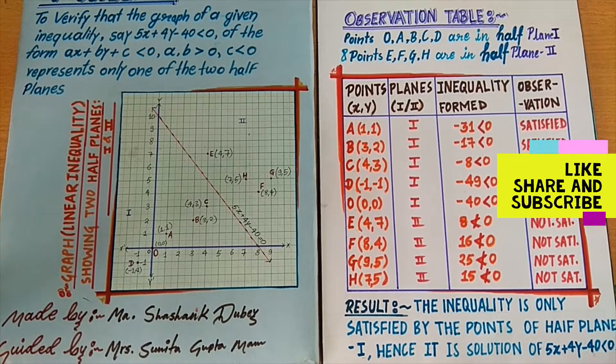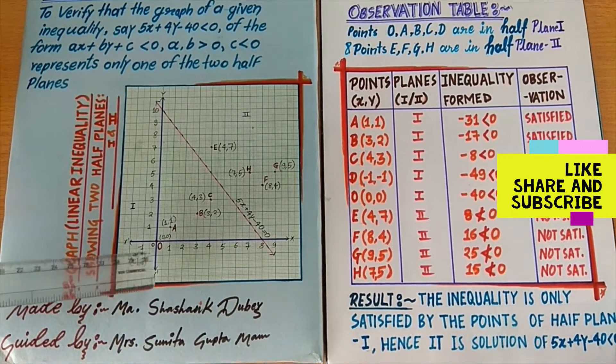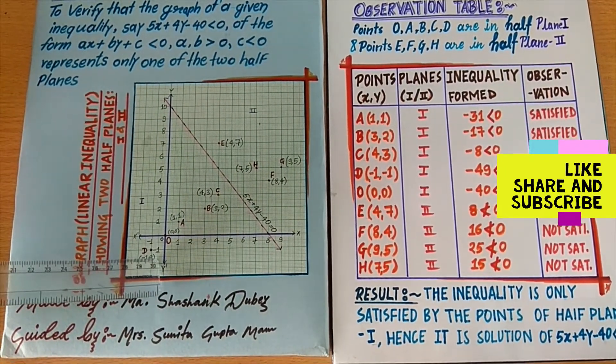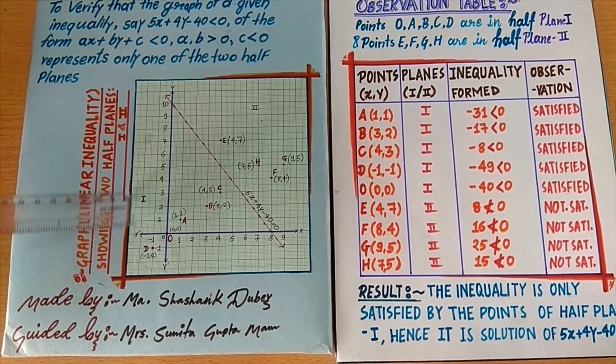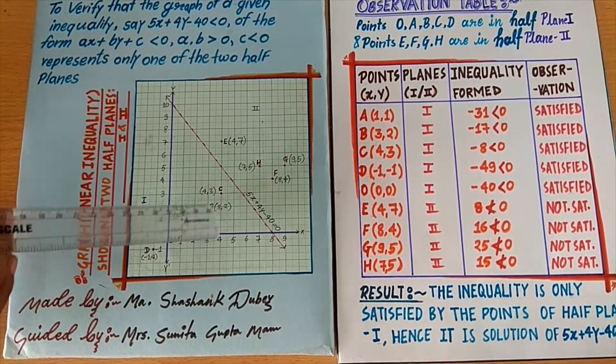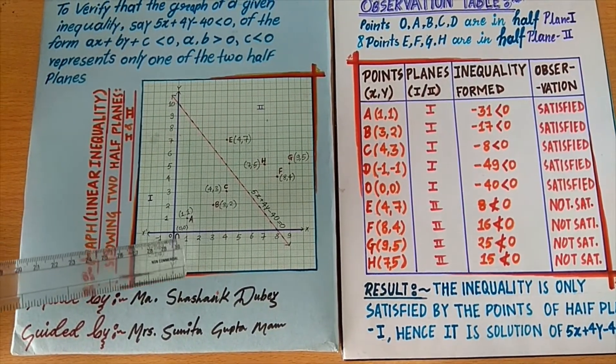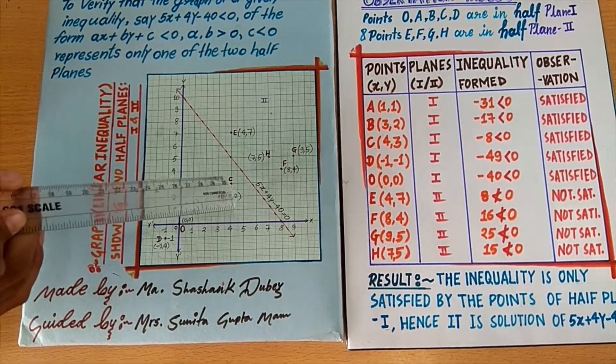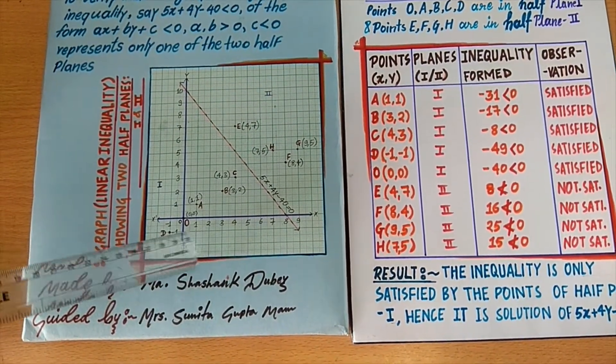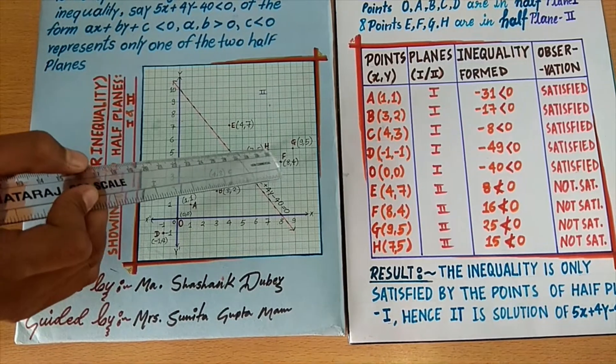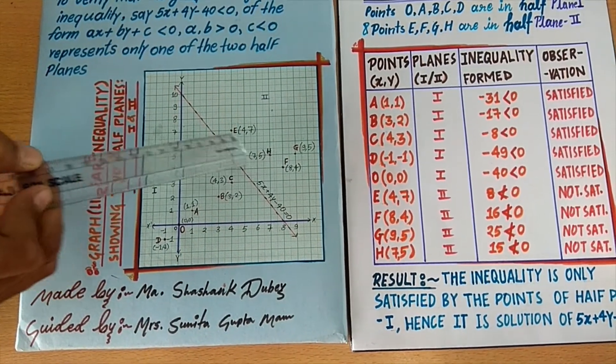Then, if we see in the Cartesian plane, all the points which lie in plane 1 satisfy the given inequality. These points are A, B, C, D and O. And the points lying on second plane E, F, G and H do not satisfy the given inequality.